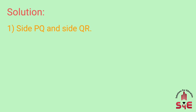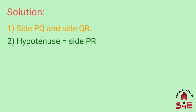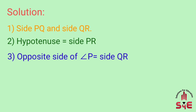Solution of first: sides forming the right angle are side PQ and side QR. Second: hypotenuse is equal to side PR. Third: opposite side of angle P is side QR.